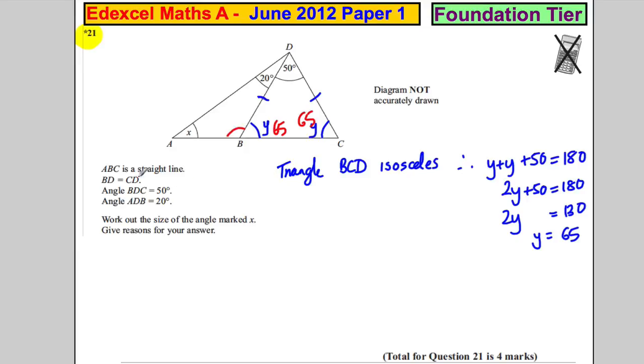Because this is on a straight line, we call this angle Z. Z must equal 180 minus 65, which is 115. Angles on a straight line equal 180, so Z equals 115.